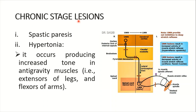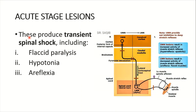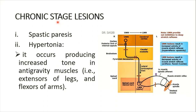The chronic stage lesions are different. In the acute stage there was flaccid paralysis — muscles were soft. As the lesion becomes chronic, the upper motor neuron paralysis becomes spastic paralysis. What is spasticity? The muscles are hard — very hard. Though they are paralyzed and cannot function, the muscles are hard. There is hypertonia — increased tone. Hypertonia occurs producing increased tone in antigravity muscles, that is extensors of the legs and flexors of the arms. Their tone would be increased — hypertonia.